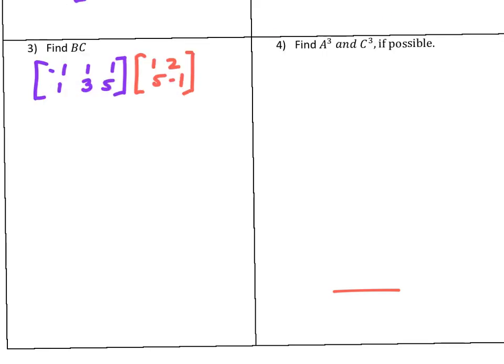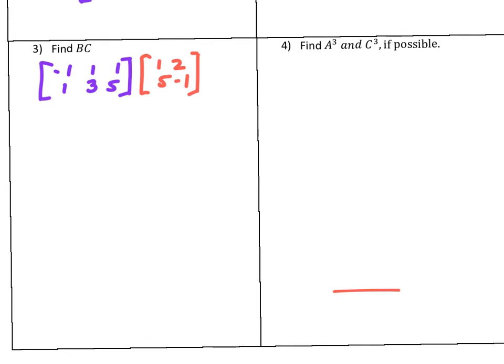Example 3 says find the product BC. We've got to do a dimension check. This is 2×3 and this one is 2×2. What are you going to tell me? Correct, this is not possible.